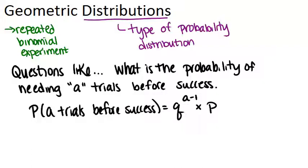Now, a geometric distribution is an example of a probability distribution. So that means it's a graph or a table that organizes all the different possible values for a and the associated probabilities.